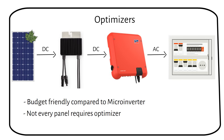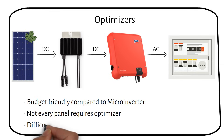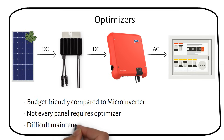Like micro inverters, if a power optimizer fails it might be challenging to replace it because it's located on the roof. Additionally, ensuring compatibility between the power optimizer and the solar panels is crucial, requiring careful selection during the planning process.